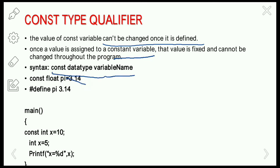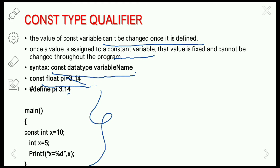The syntax is: const [data type] [variable name]. Here we use the const keyword followed by a data type — for example, float — and the variable name pi, assigned the value 3.14. This is useful for a program based on the area of a circle, where the pi value won't change throughout execution.